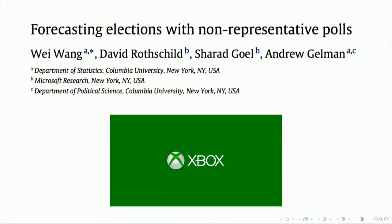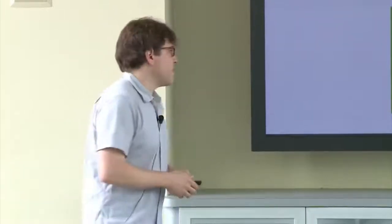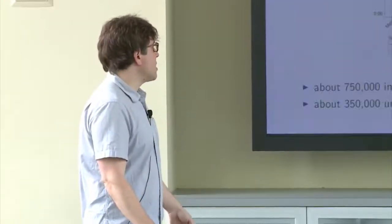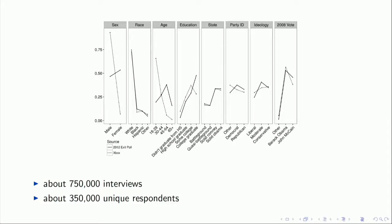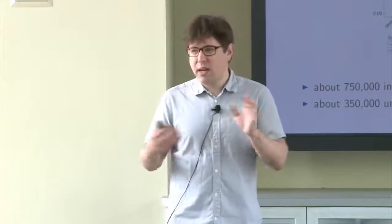Here's a much more complicated version: Wang et al.'s paper on forecasting elections with non-representative polls, using polls from the Xbox — a video game platform. The people on this platform are not in any way representative of all people in the US; they're a very distinctive population. What they did was take a huge sample from the Xbox — about 350,000 unique respondents and roughly 750,000 interviews. This is much, much larger than any other election poll I know of, and that has a very important scientific purpose which I'll explain in a second.